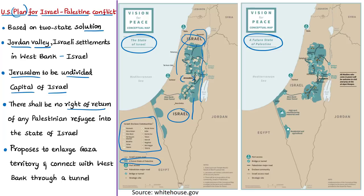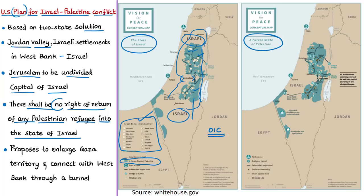Israel will also control important road infrastructure within the Palestine state due to the 15 Israeli enclaves located within Palestinian territory. The US plan clearly rejects the right of return of Palestinian refugees into the state of Israel and prescribes three options for Palestinian refugees: absorption into the future state of Palestine, integration into other countries subject to those countries' consent, or acceptance of 5,000 Palestinian refugees per year for 10 years in member states of the Organisation of Islamic Cooperation.